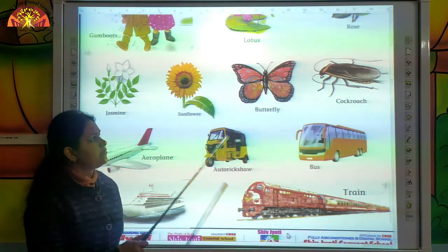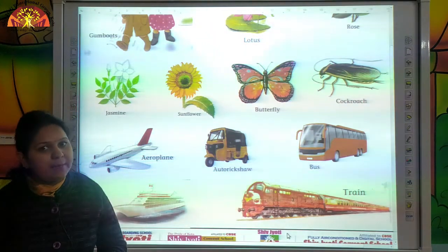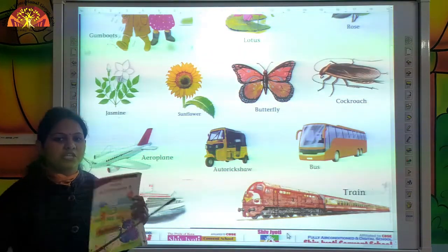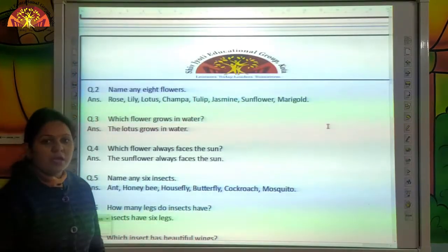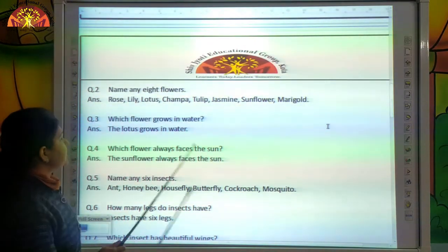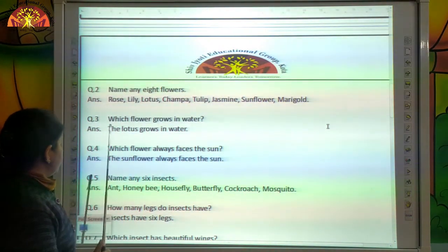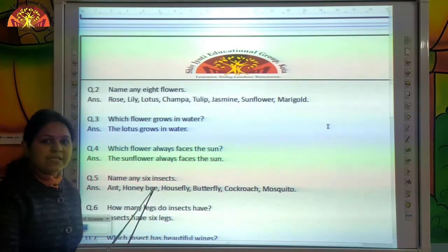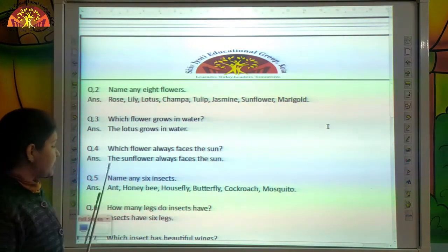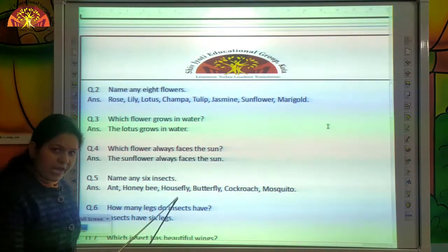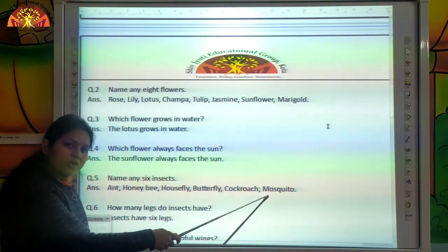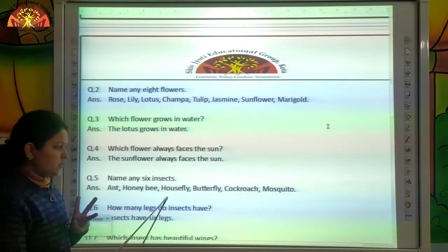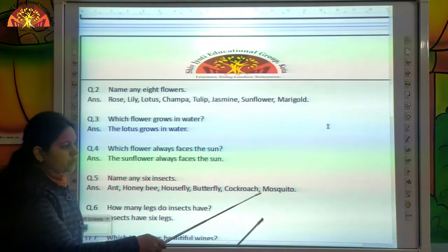Kids, ma'am has given some pictures here just as an example, but you have to learn to identify all the pictures from your GKN conversation book. Let's revise the question answers. Name any six insects: ant, honeybee, housefly, butterfly, cockroach and mosquito.